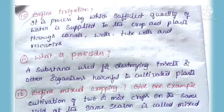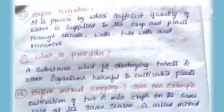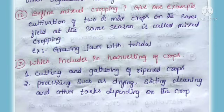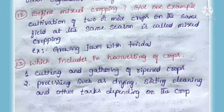Next question: What are pesticides? Answer: A substance used for destroying insects or other organisms harmful to cultivated plants. Twelfth question: Define mixed cropping and give an example. Answer: Cultivation of two or more crops on the same field at the same season is called mixed cropping.